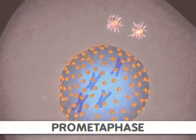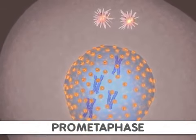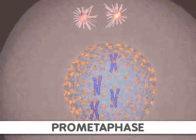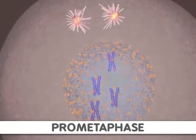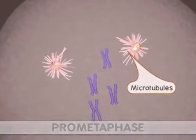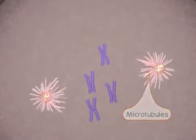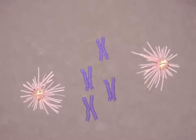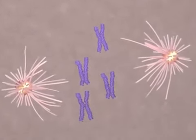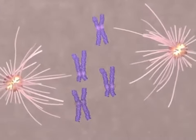Next, prometaphase begins when the nuclear membrane is broken down. At the same time, microtubule strands, or spindle fibers, are growing from the centrosomes. These strands attach to a protein structure called the kinetochore. One kinetochore is attached to the centromere of each sister chromatid.